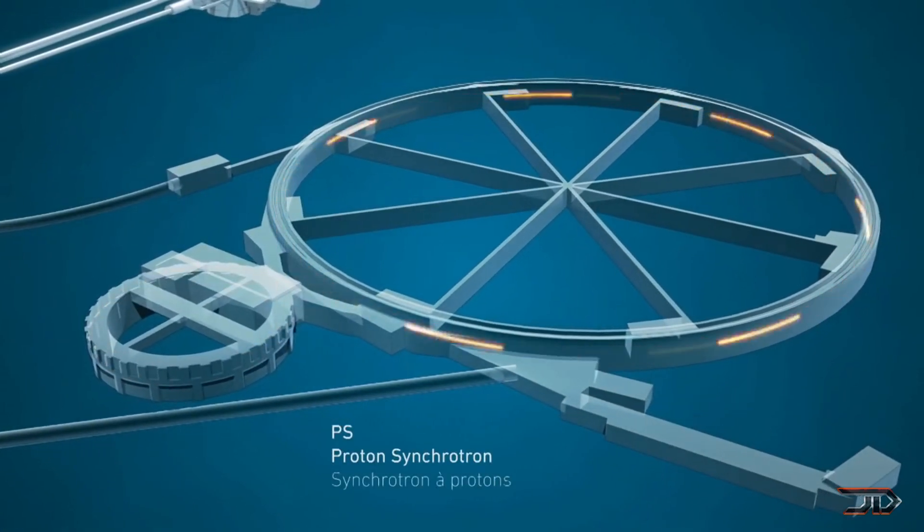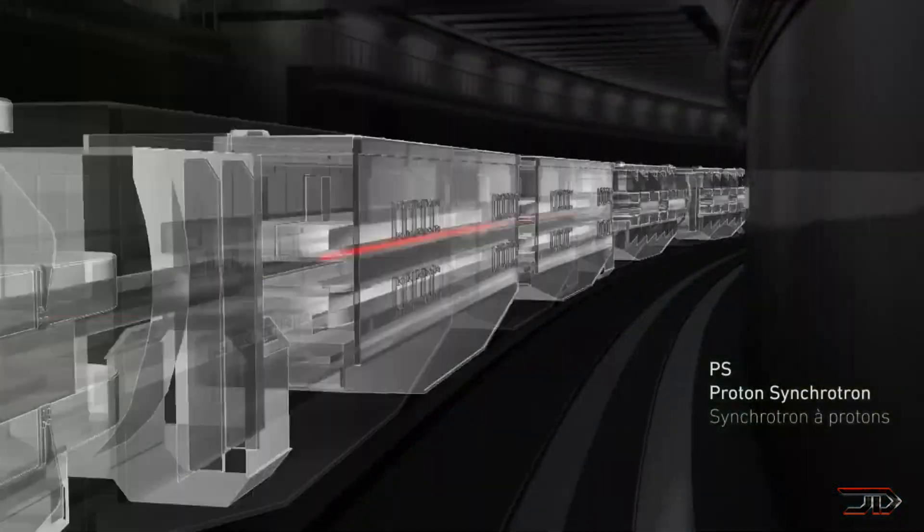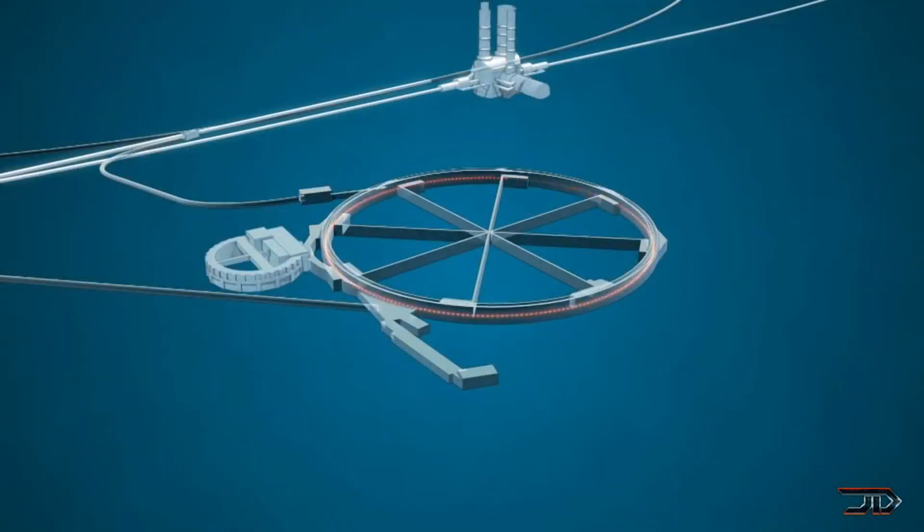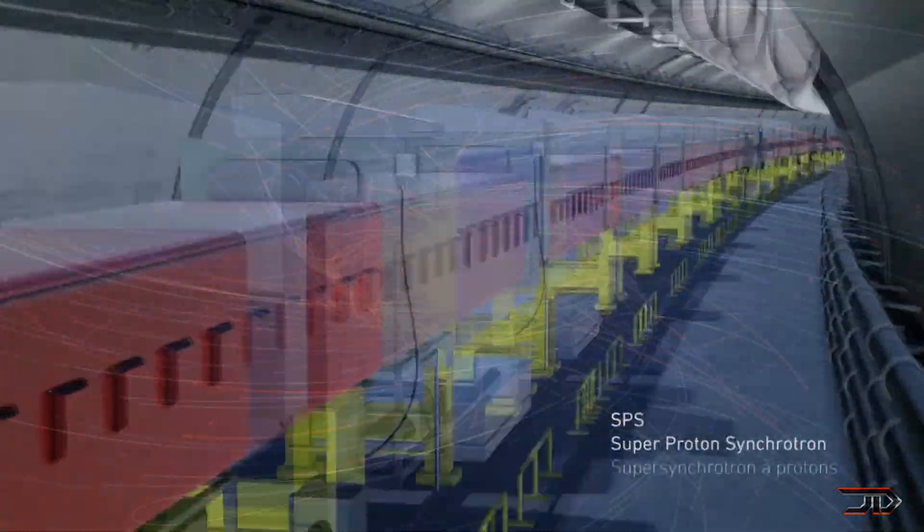These beams of protons are hurtled around in opposite directions until they collide with such force that they generate subatomic particles, such as the Higgs boson. This facility helped prove that the Higgs field actually exists and that elementary particles have mass.